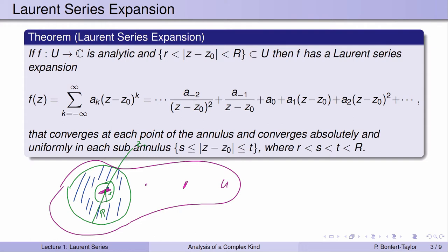It looks a little bit different from a Taylor series. The one difference is that the summation starts at negative infinity and goes all the way to infinity — it's called a doubly infinite series. So I need dots indicating the series goes on in both directions. I have a_0, a_1 (z minus c0), a_2 (z minus c0) squared, just as in a Taylor series. But I also have negative exponents k. When k equals negative 1, (z minus c0) to the negative 1 is 1 over (z minus c0). And then there's an a_{-2} over (z minus c0) squared term, and so forth.